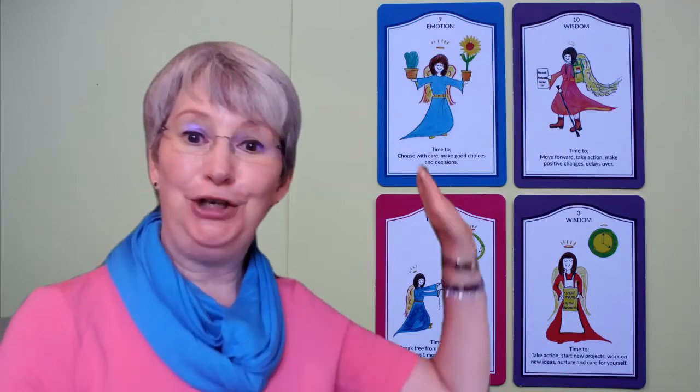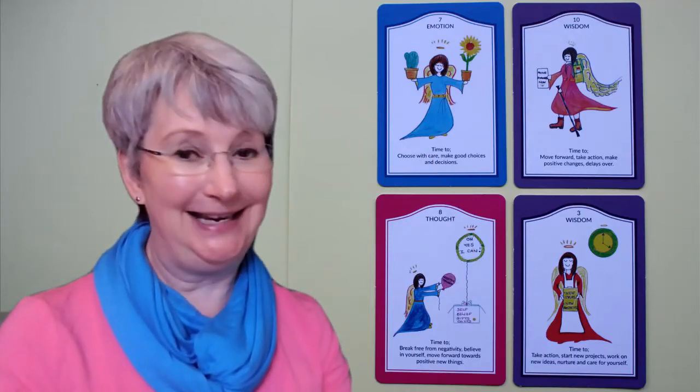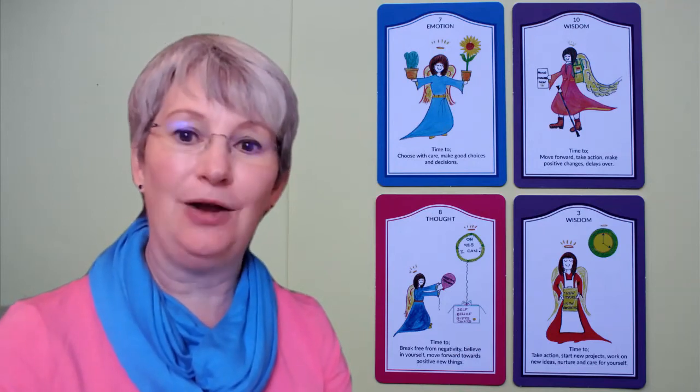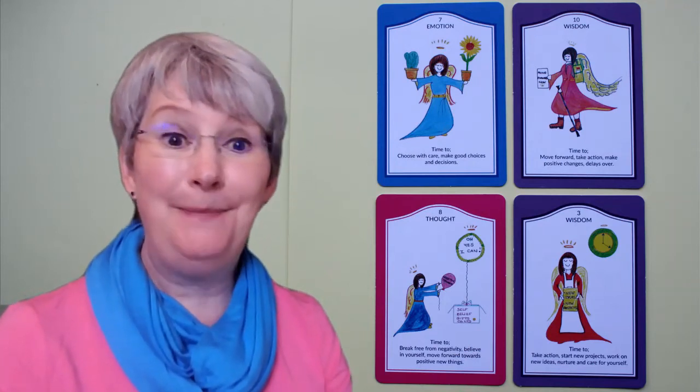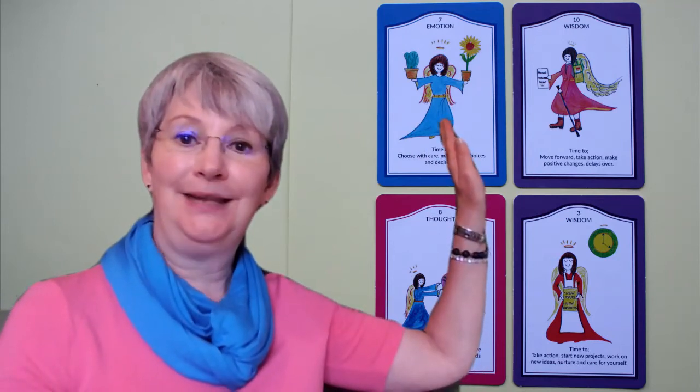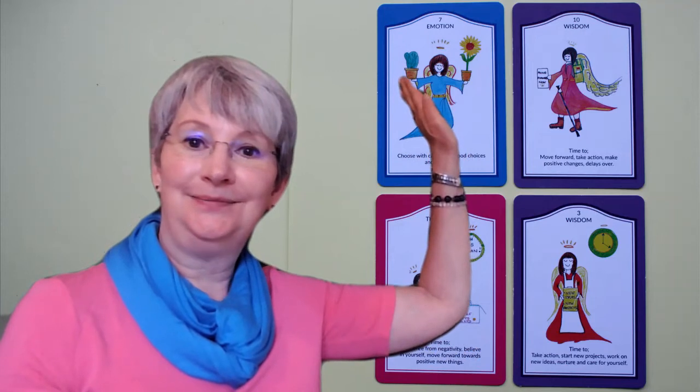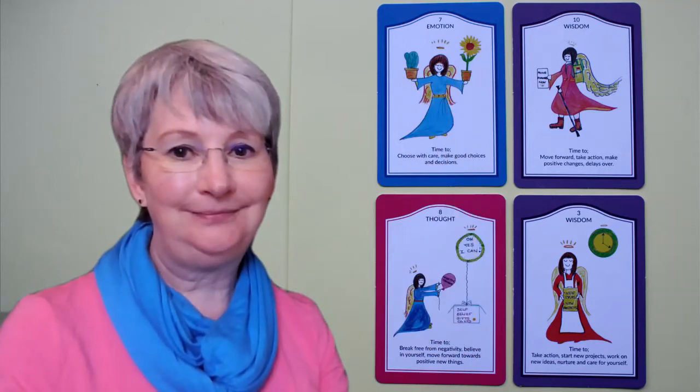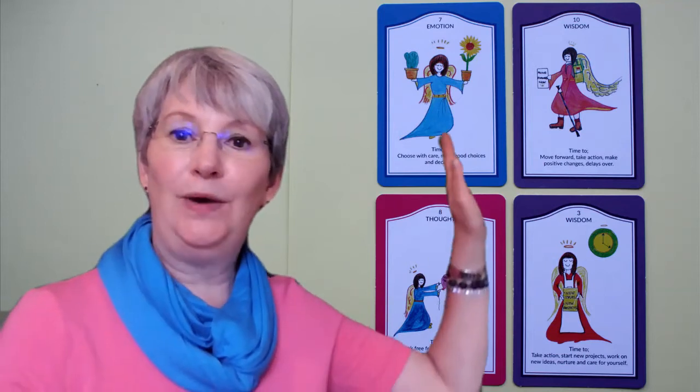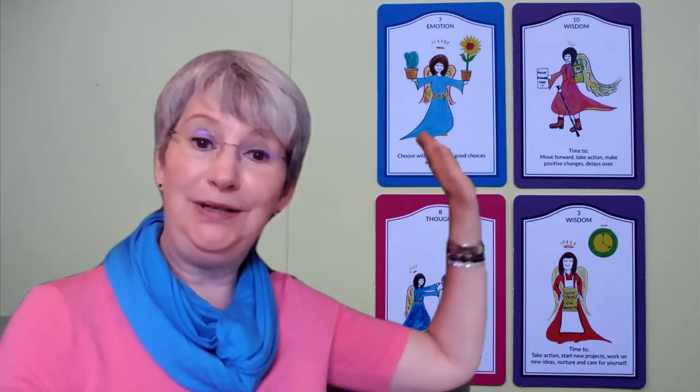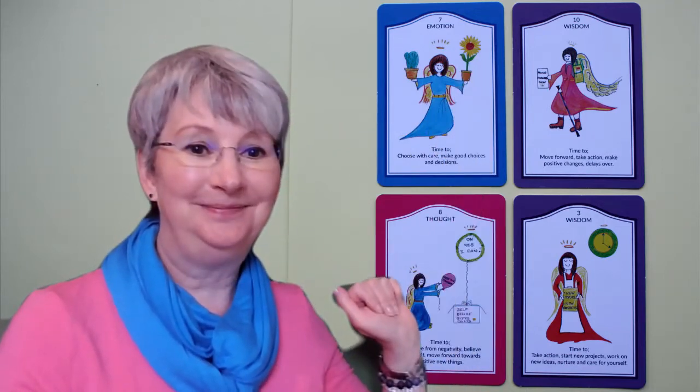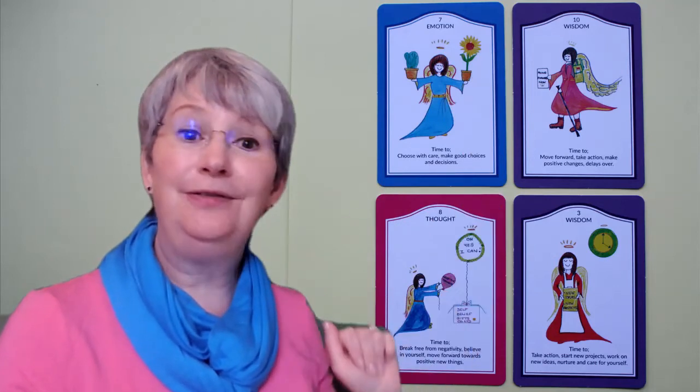So Capricorn, your overall energy for this week is the seven of emotion card. This is about decisions and choosing with care, making good choices. If we look at the angel here, she's got a cactus and she's got a sunflower. Choose the sunflower. So when decisions arise this week, choose with care, think it through. Choose the sunflower.